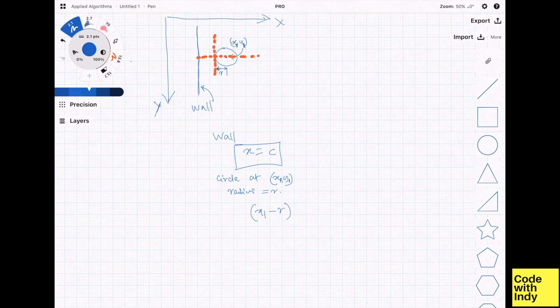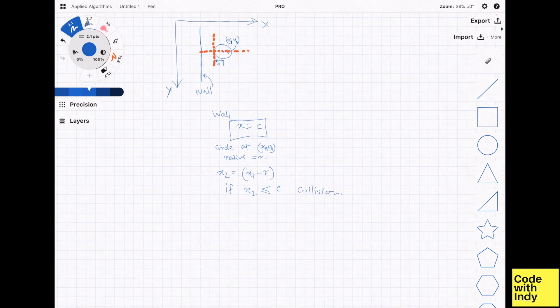Now, depending on the speed of the circle, you may update its position by some step value. So the condition we must look for is that x1 minus r less than or equal to c1. Here the r and the c1 are constants. So our condition to check would be x1 less than or equal to c1 plus r.